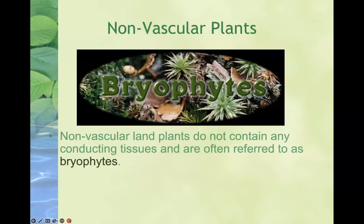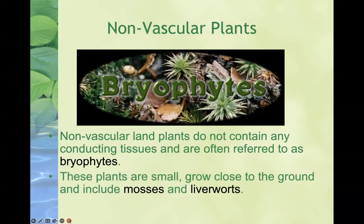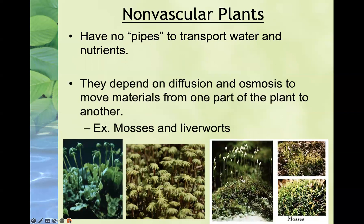Non-vascular plants are plants that do not contain any conducting tissues and are often referred to as bryophytes. These plants are typically small and grow very close to the ground, and they include mosses and liverworts. These non-vascular plants don't have any pipes or mechanisms to transport water and nutrients, which is why they grow short and close to the ground. They depend on other mechanisms of transport such as osmosis and diffusion to move materials from one part of the plant to the next.